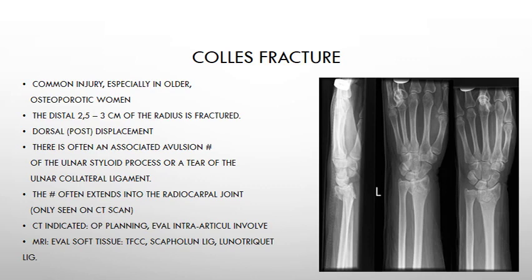The fracture can extend into the radiocarpal joint, which is more characteristic of a Barton's fracture — an intra-articular fracture. A Colles fracture is extra-articular, but there may be some extension. X-ray views are important, and CT is requested for operative planning to determine where the different fragments are and whether there is any intra-articular involvement.